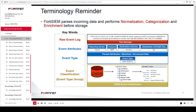FortiSIEM parses incoming data and performs normalization, categorization, and enrichment before the data is stored. For each received event, the parsing engine takes the raw message, extracts everything it can from it, and creates a normalized structured data event from it. The example shown on the slide illustrates the terminology used for each stage of the parsing, normalization, and categorization process.